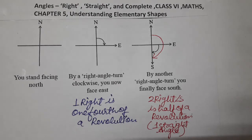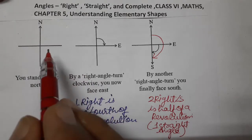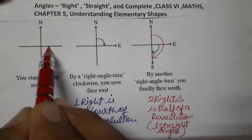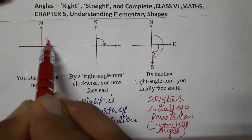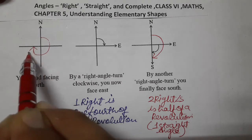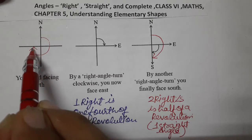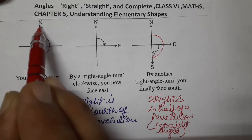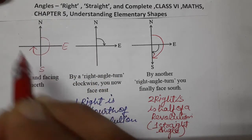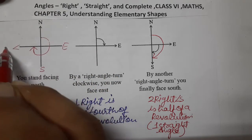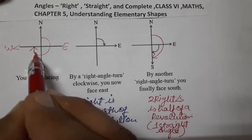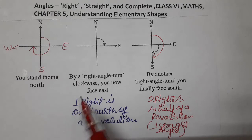Now, what happens when we move three right angles? Counting one, two, and three right angles, when we move three right angles, we pass through north, east, south, and reach west. So we reach at west — that is three right angles, and it is three-fourths of a revolution.